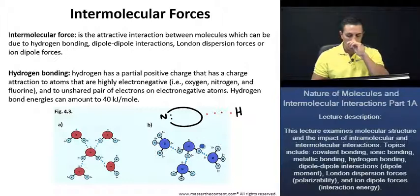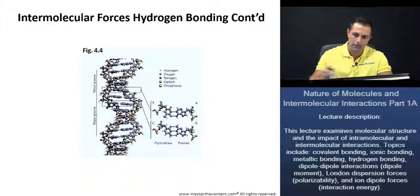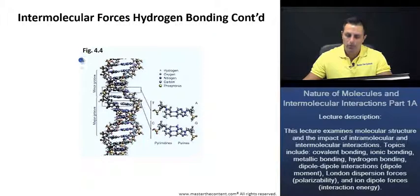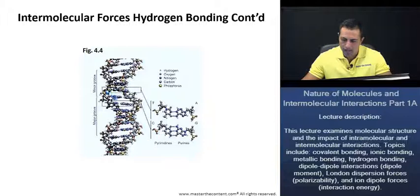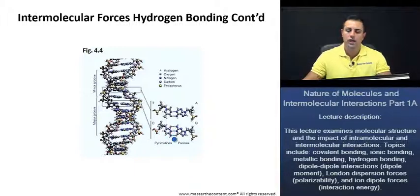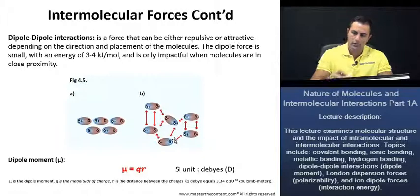Furthermore, hydrogen bonding also has biological implications. Here in Figure 4.4, we're looking at a picture of DNA, where we have two nucleotide strands coiled around each other in a ladder-like structure. If we look very closely, we see that there is hydrogen bonding that exists throughout — hydrogen bonding, hydrogen bonding, hydrogen bonding, hydrogen bonding. We'll talk more about this in the biology lectures, but I just wanted to introduce the notion now.